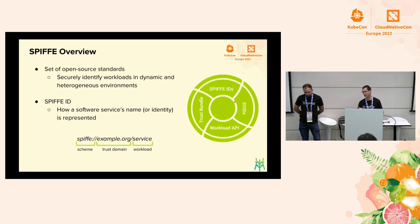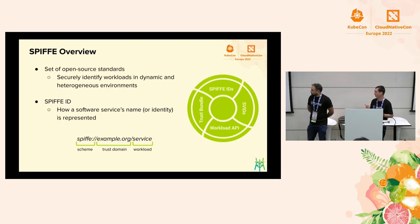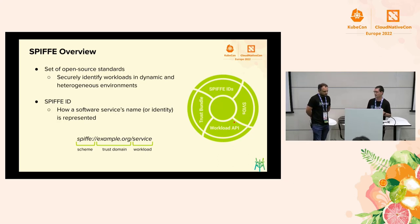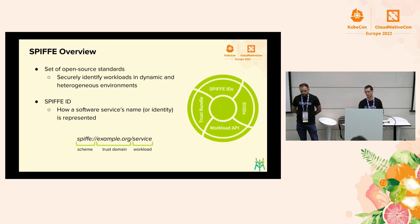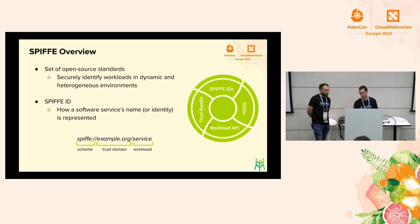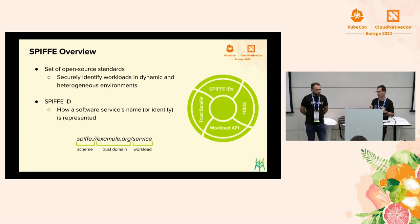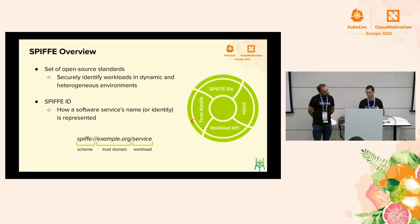We have a way to represent an identity and a document that can hold that identity, but we also need a way to retrieve that identity. For that, we have the Workload API — the API that SPIFFE defines for workloads to be able to fetch their identities. And finally, we have the SPIFFE Trust Bundle, which allows us to verify those identities within a trust domain, because they are a set of public keys of that trust domain.